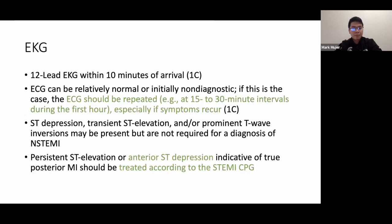It's a 1C recommendation to get a 12-lead EKG within 10 minutes of arrival. The initial EKG can be normal or non-diagnostic. If you suspect ACS, repeat EKGs at 15 to 30-minute intervals during the first hour, and again if symptoms recur. A normal EKG is possible in NSTEMI, but you can expect ST depression, transient ST elevation, or prominent T-wave inversions. If there is persistent ST elevation or anterior ST depression suggesting a true posterior MI, treat according to STEMI guidelines.